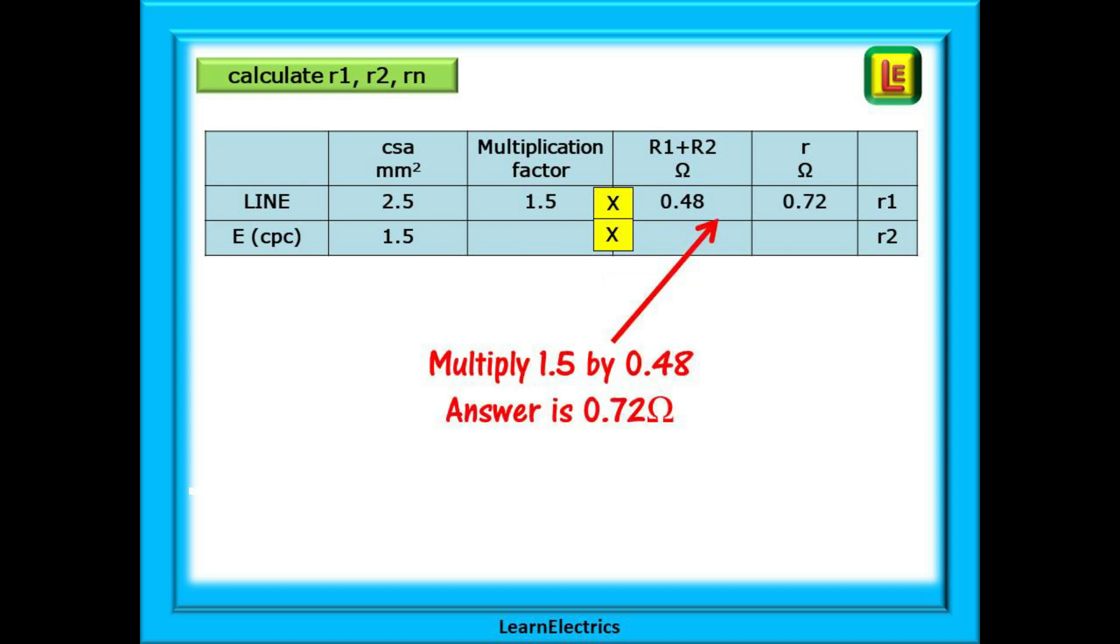So, top row for the line, multiply 1.5 by 0.48 in this case, and our end-to-end or little R1 resistance is 0.72 ohms.